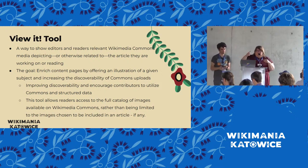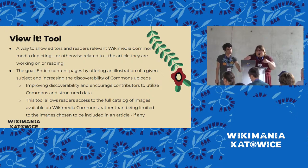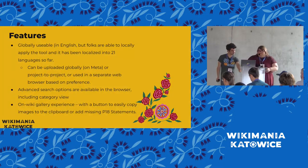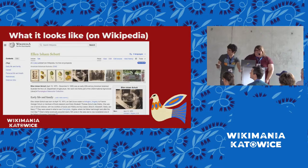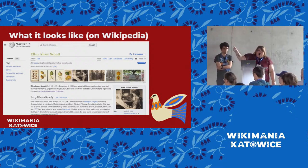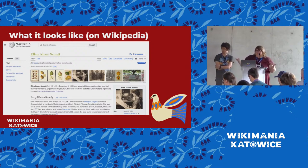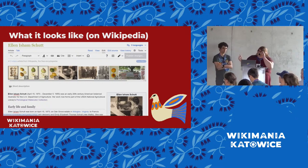I have used ViewIt a lot to swap out an image for the exact same one that's just higher resolution. As we improve scanning and make better available images, we can upload higher resolutions. This is what it looks like on Wikipedia — you'll see a carousel of images at the top. Elam Ishim Shu is a pomological watercolorist, and these are examples of what ViewIt will show you. It's not always just pictures of the person — sometimes if they're an artist, it's their artwork; if it's an institution, it might be stuff they hold in their collection.